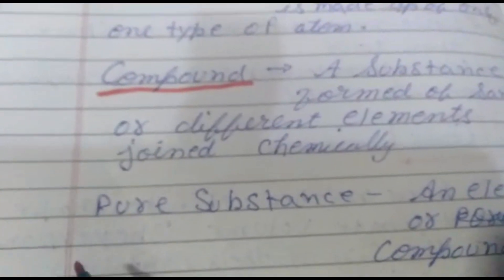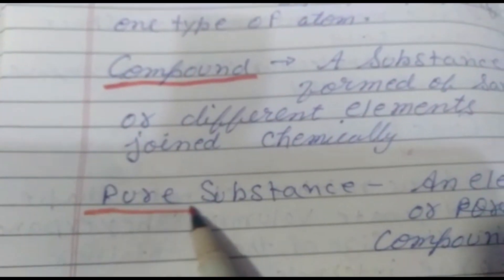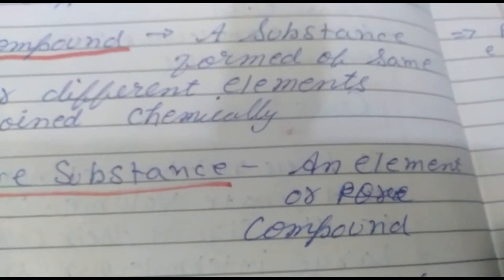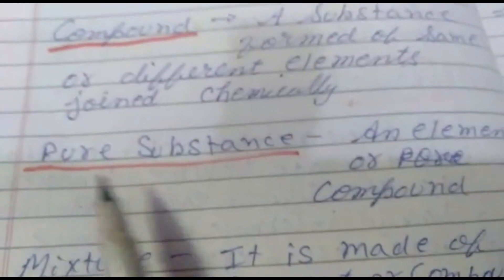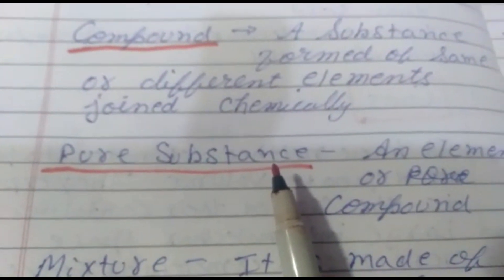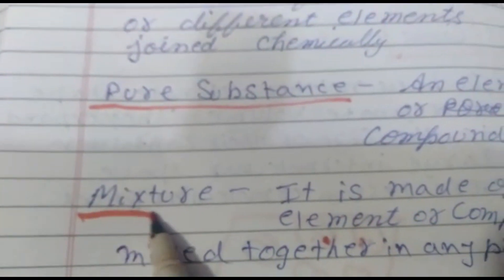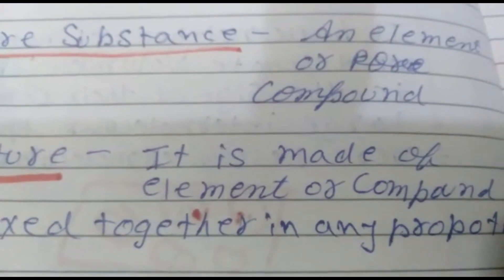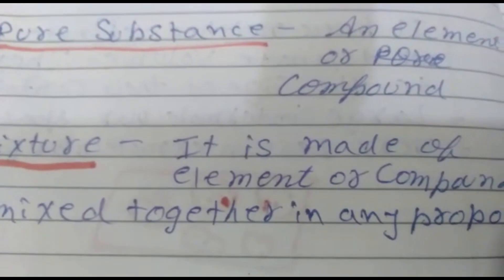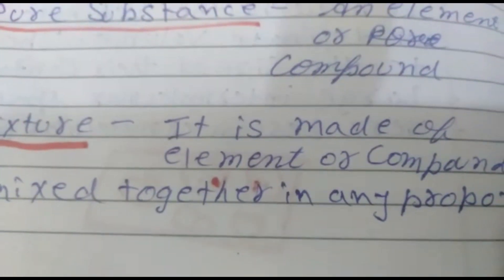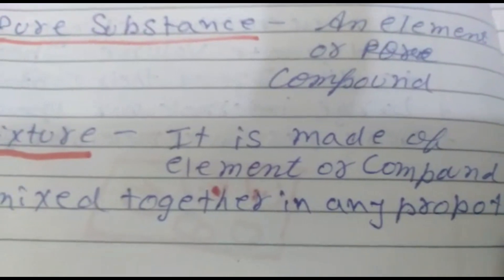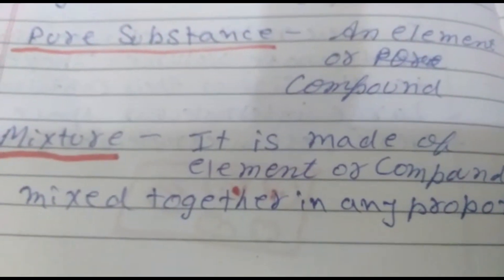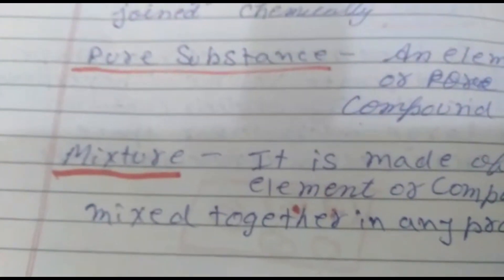Pure substance — an element or a compound can be considered as a pure substance. Mixture — studied in Class 6, a mixture is made up of elements or compounds mixed together in any proportion. The proportion of mixing is not fixed in a mixture, so it is called a mixture.